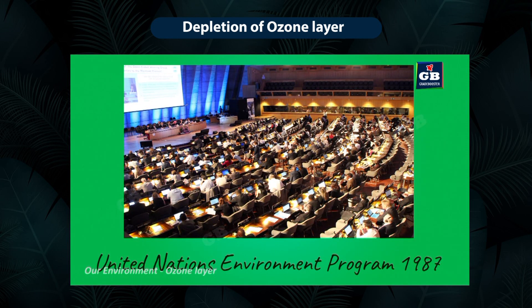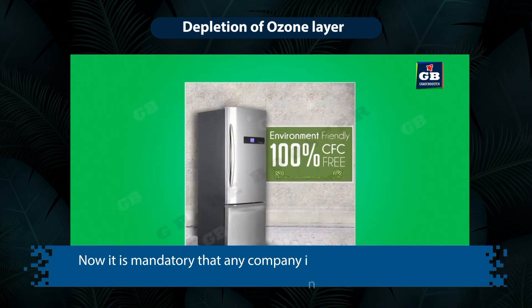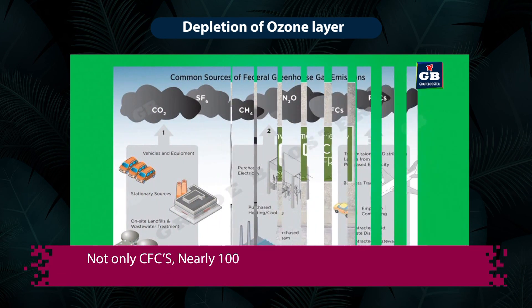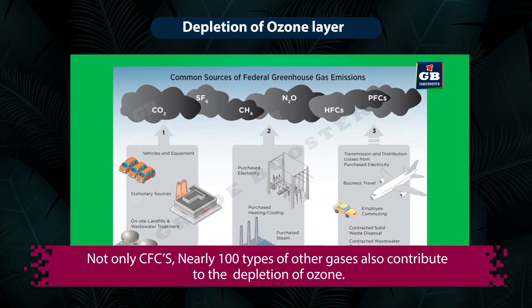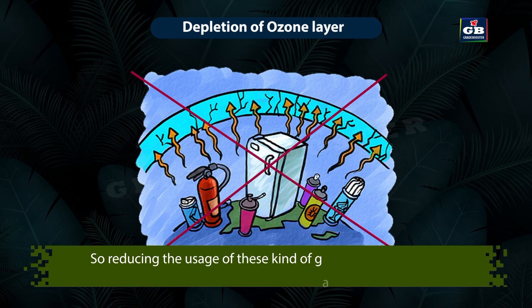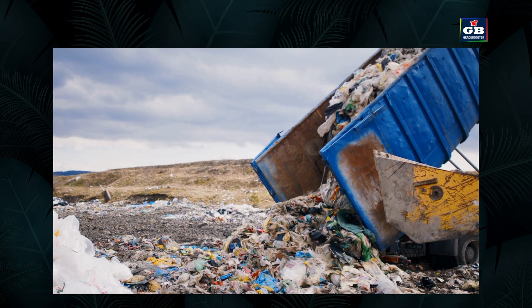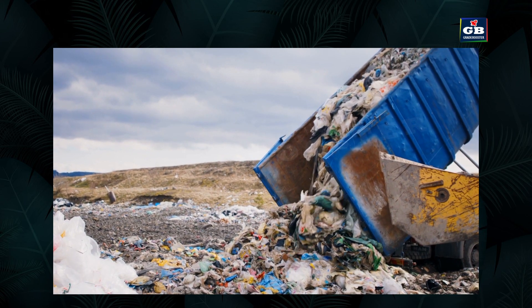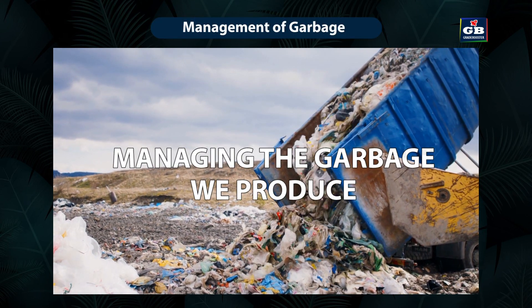In 1987, the United Nations Environment Programme (UNEP) made an agreement with all countries to stop the usage of CFCs. Now it is mandatory that no company in the world can make refrigerators with CFCs. Not only CFCs — nearly 100 types of other gases also contribute to the depletion of ozone. So reducing the usage of these kinds of gases helps to protect the ozone layer.